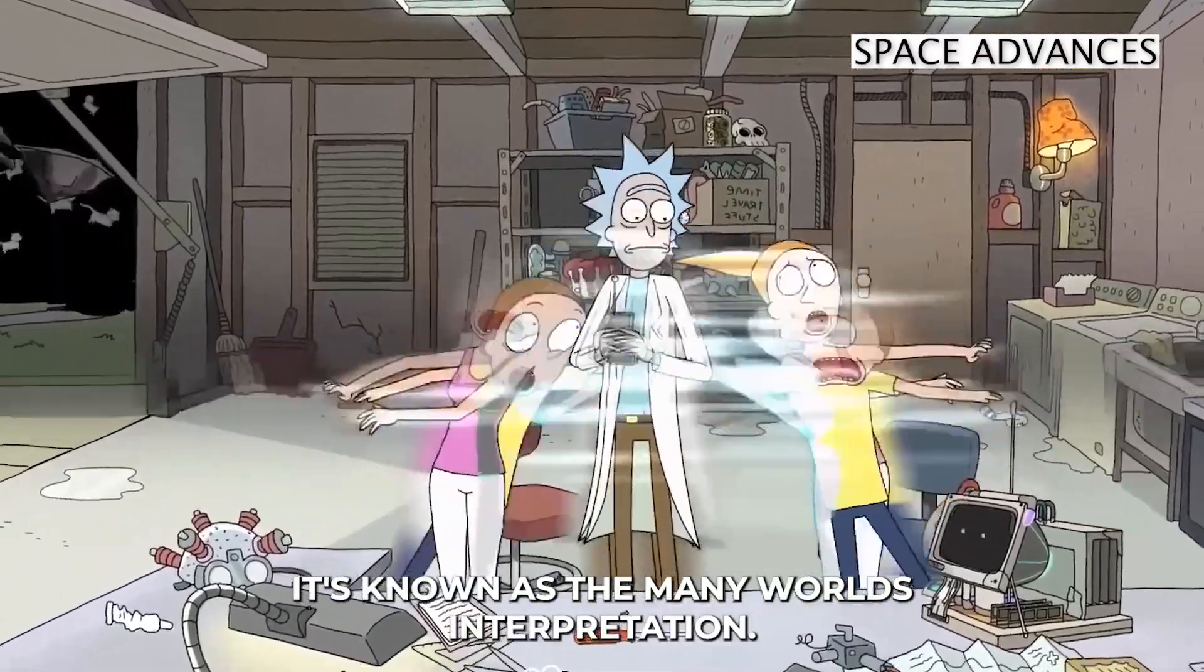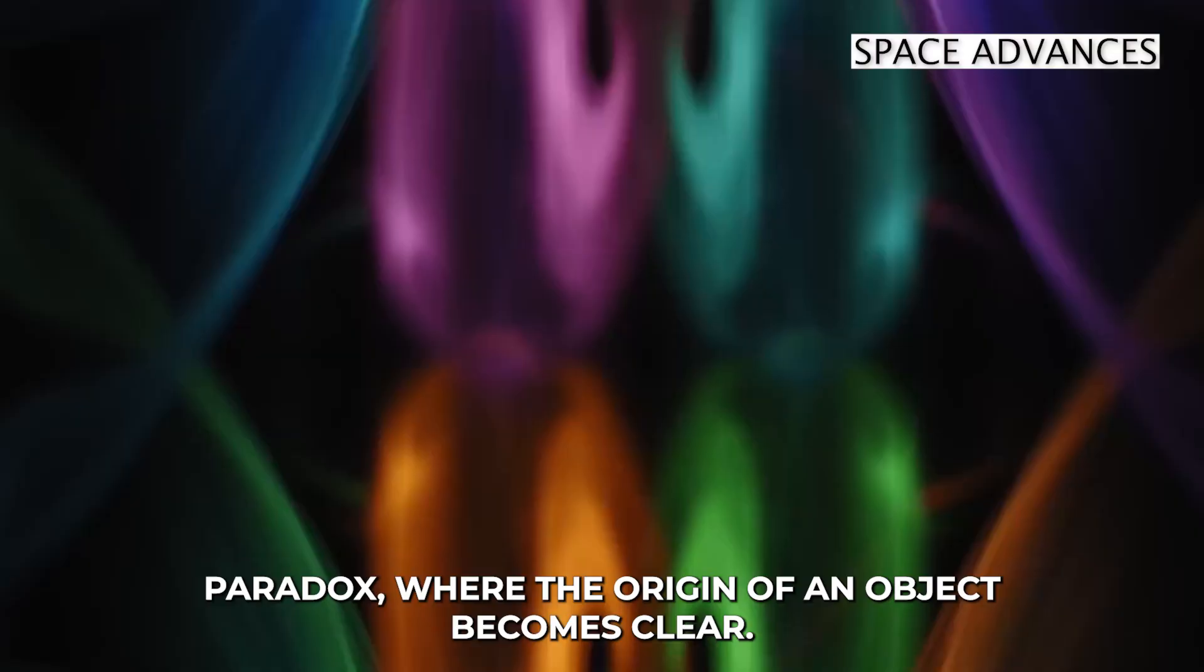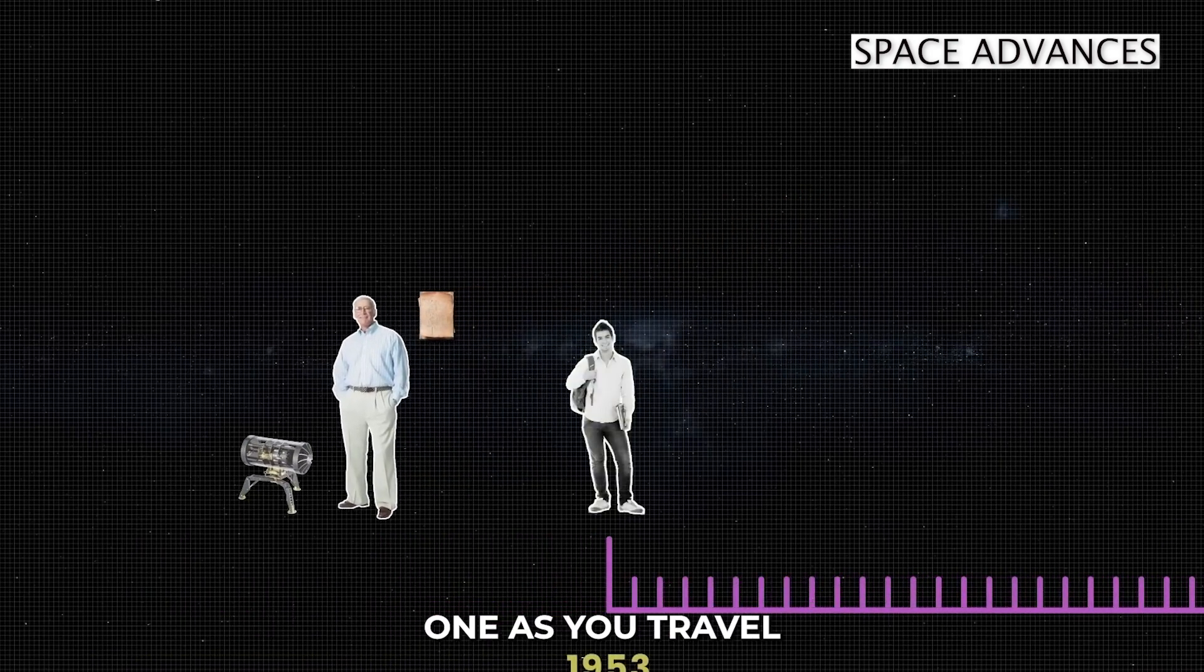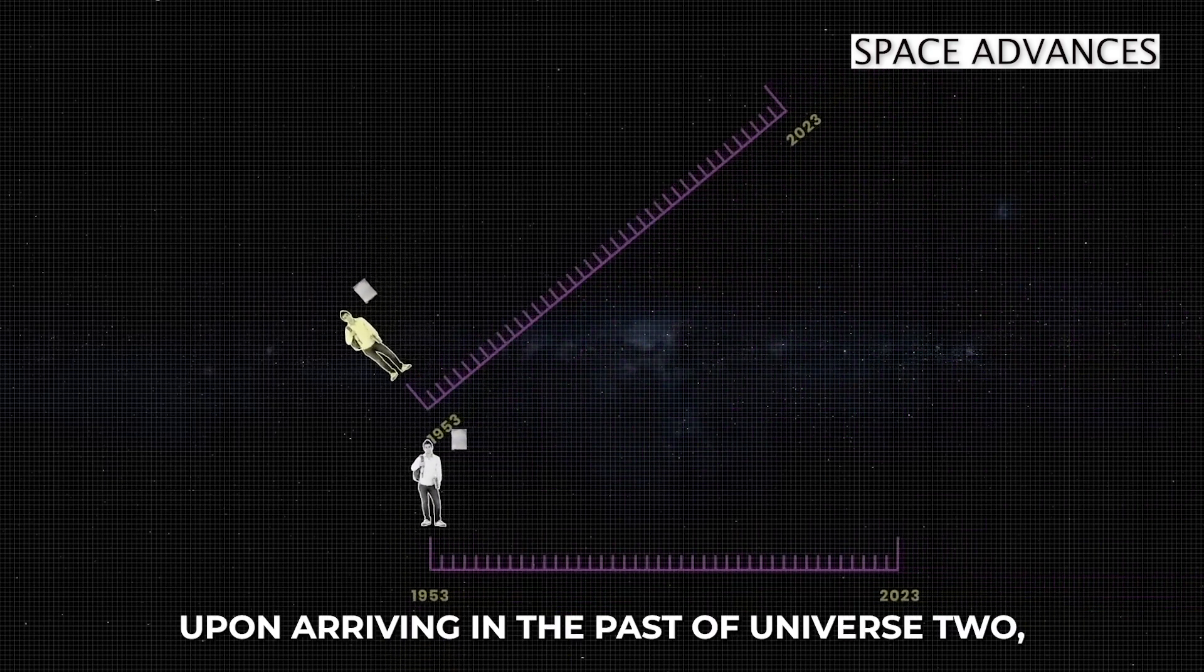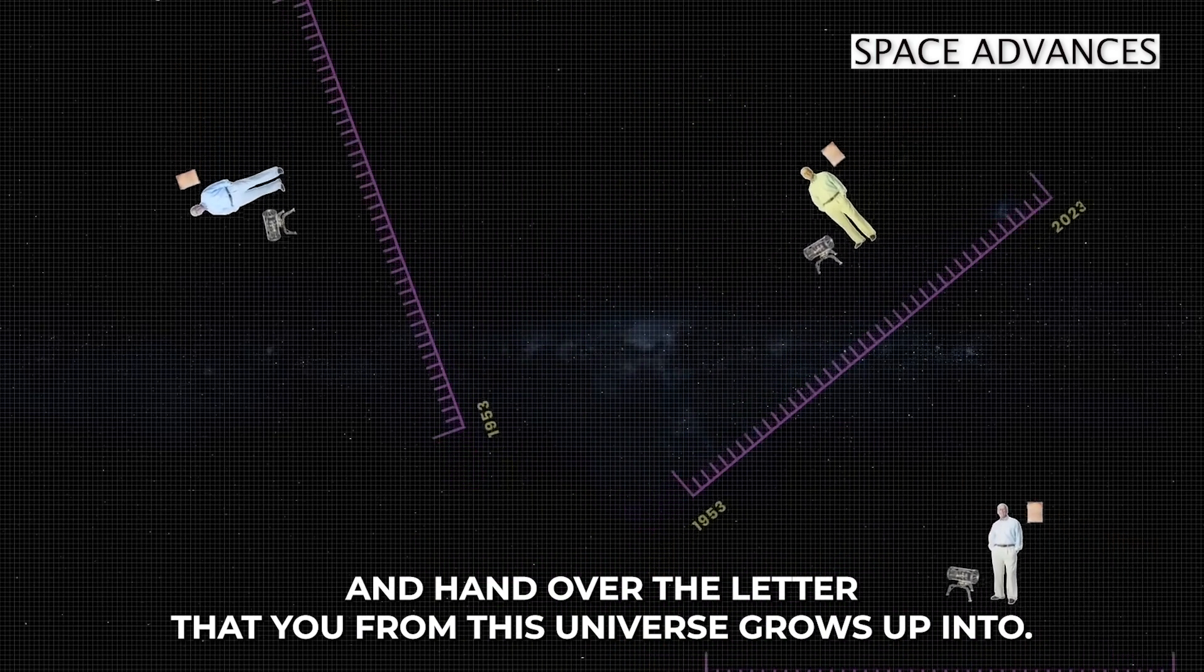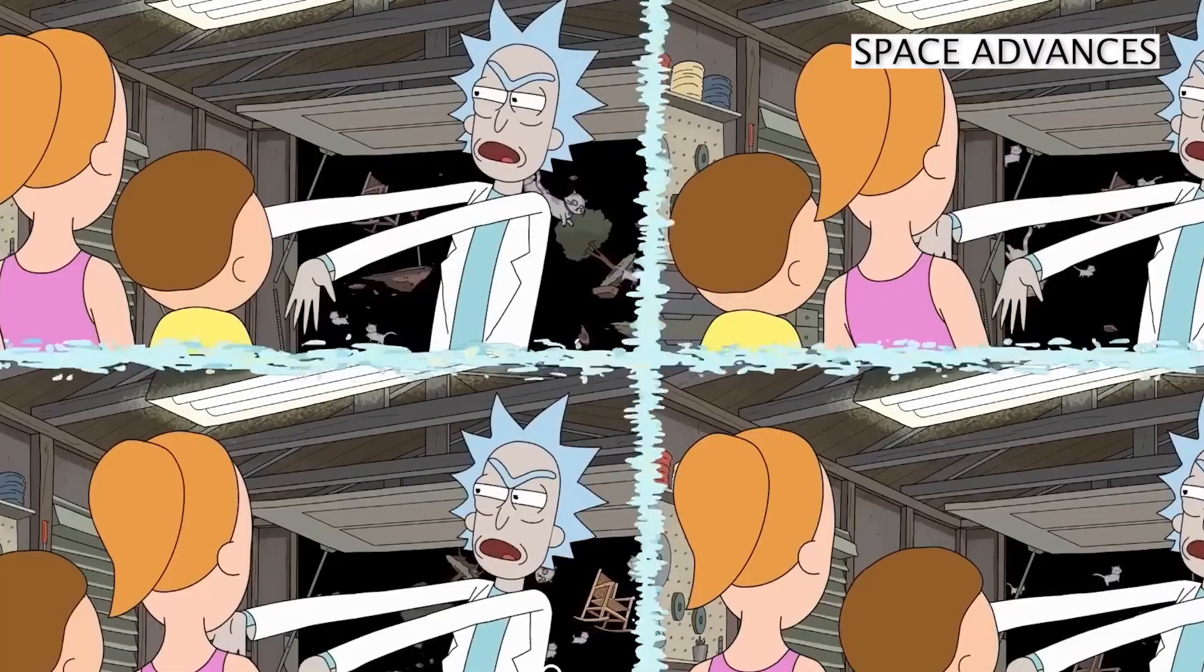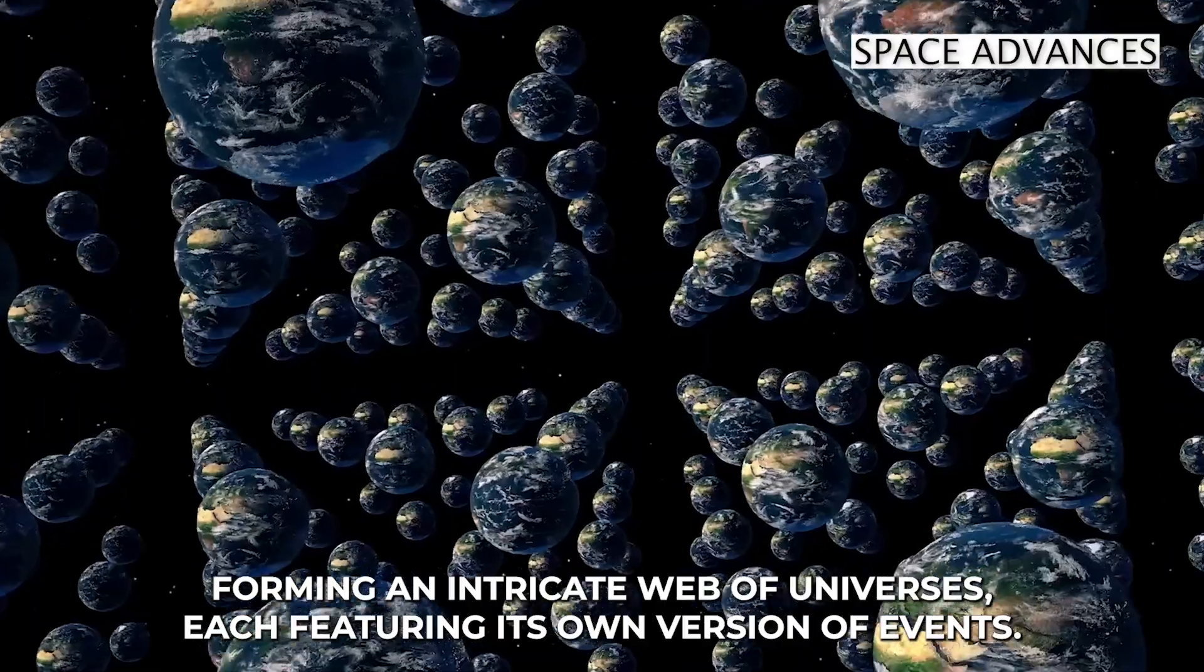The many-worlds interpretation provides an intriguing perspective on the bootstrap paradox, where the origin of an object becomes clear. Imagine a series of universes unveiling each time you travel into the past. You write a letter with time machine instructions in Universe 1. As you travel to the past, a new universe branches off from the original one. Upon arriving in the past of Universe 2, you encounter one of the infinite versions of your past self and hand over the letter. That you from this universe grows up into becoming a physicist, builds a time machine, and creates a Universe 3, where yet another version of you will get the same letter. That's when you launch the cycle which perpetuates endlessly, forming an intricate web of universes, each featuring its own version of events.